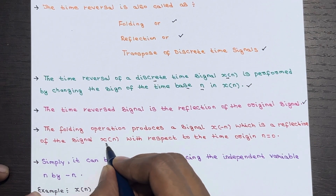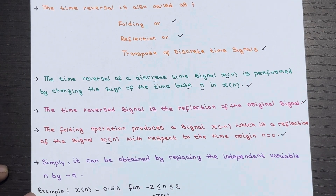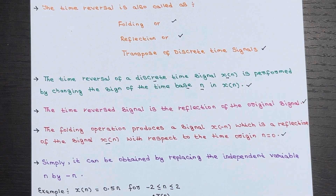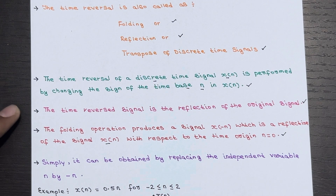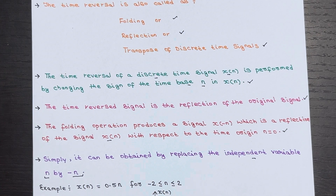The folding operation produces a signal X of minus n, which is a reflection of the signal X of n with respect to the time origin n equals 0. This reflection is achieved through the folding operation, producing a new signal X of minus n — a mirror image of the original signal X of n with respect to the time origin n equals 0.